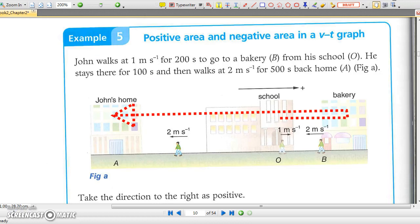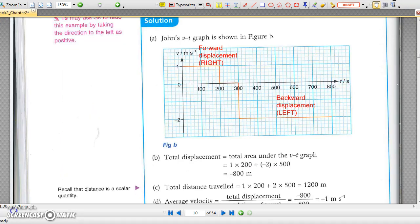In example 5, John walks to the right and rests, and then walks to the left. His velocity changes in steps. The area under the velocity-time graph is to be taken as positive at the beginning, and negative at the end of the motion.